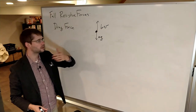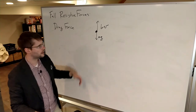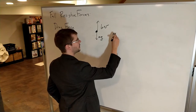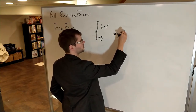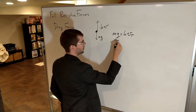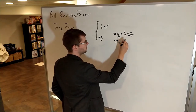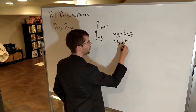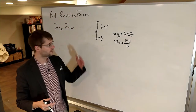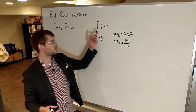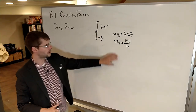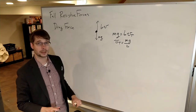Eventually these forces become equal, and when they are equal we get terminal velocity. That means mg equals BV sub T, so terminal velocity equals mg over B. That's the maximum speed; if you're going faster than that, you'll slow down because the upward force exceeds the gravitational force.